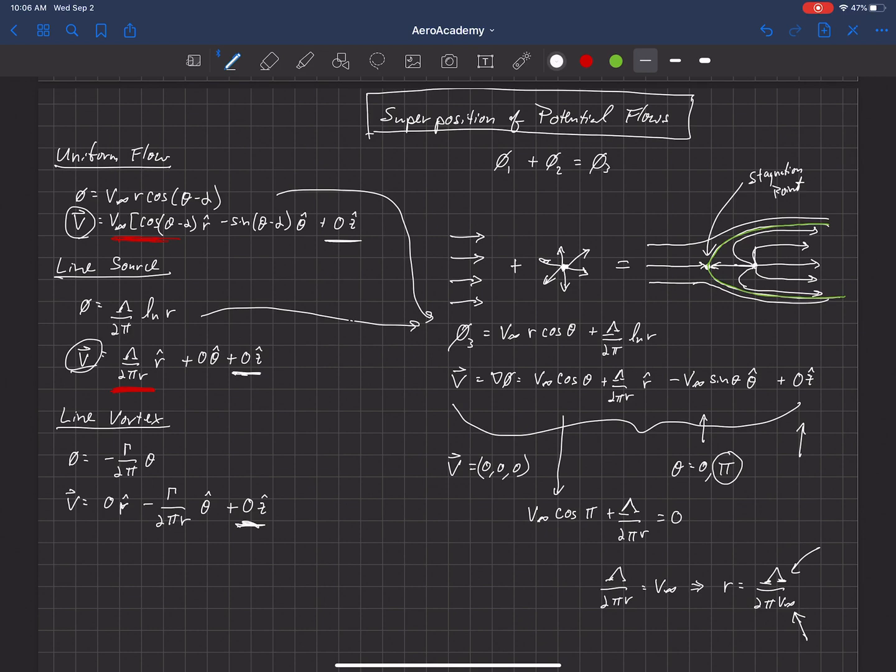So this is just one example of adding these potential flows together and getting another solution that will look different. And you can start to see that we can start to add these different components together and begin to create useful shapes in the flow and locations of stagnation points.